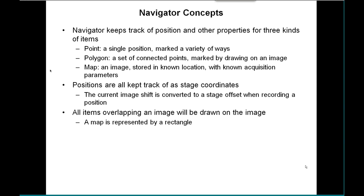The Navigator is a module that keeps track of position and other properties for three different kinds of items. There's the point, which is a single position that can be marked in a variety of ways. A polygon is a set of connected points, marked by drawing a series of points on an image. And a map is an image from a known stage location, stored in a known file location, with known acquisition parameters.